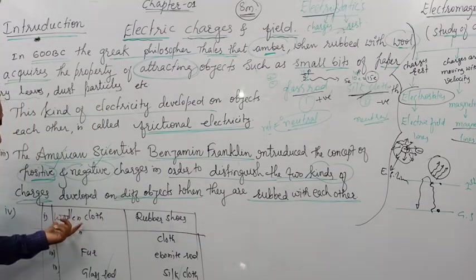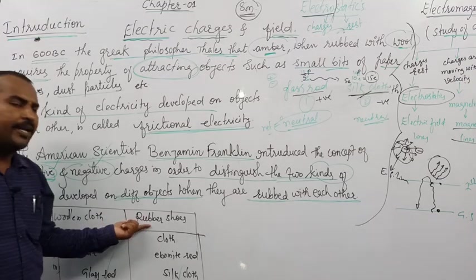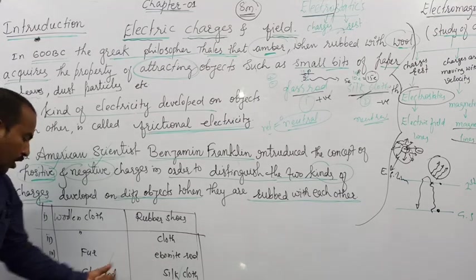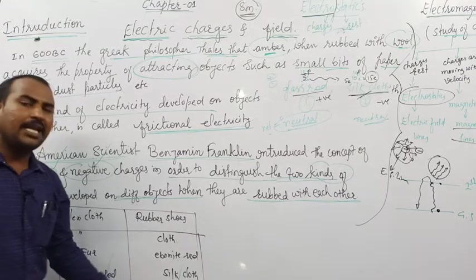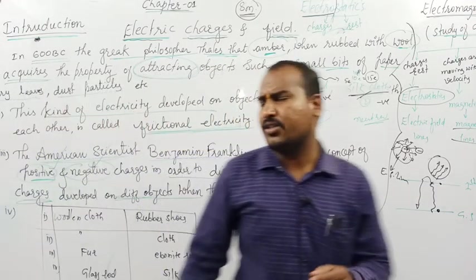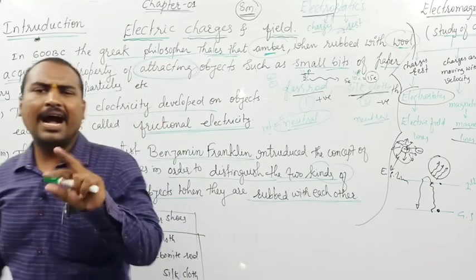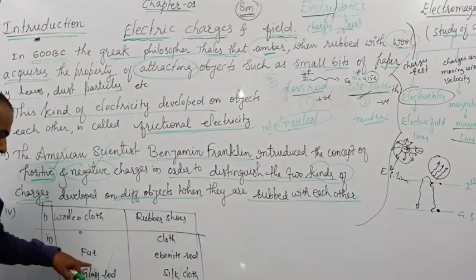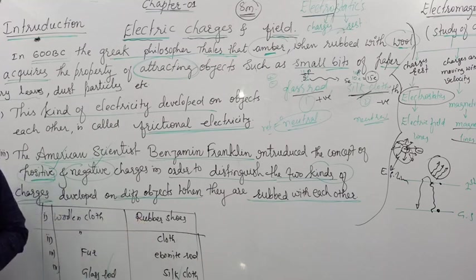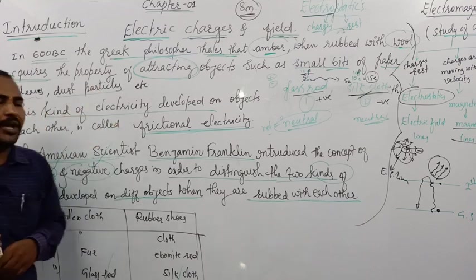Similarly, woolen cloth rubbed with rubber — it loses electrons and becomes positively charged. Fur rubbed with ebonite rod, glass rod rubbed with silk cloth. Fur is the hair of any animal. Ebonite rod is similar to amber — a hard insulating material. When rubbed with fur, it becomes a negatively charged body. This was the introduction; now we will see electrification.